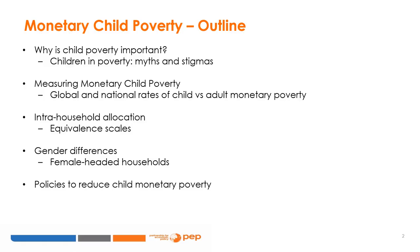In this module, we are going to talk about child poverty. First, we will talk about why child poverty is important and what are some of the myths surrounding children in poverty. Second, we will see how to measure monetary child poverty and talk about intra-household allocation and equivalence scales. Then we will touch upon gender differences, and finally we will talk about some of the policies to reduce child poverty.